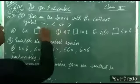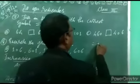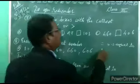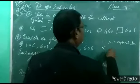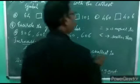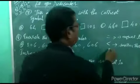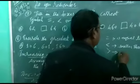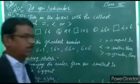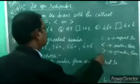These 3 symbols, or signs, were given. This sign is called 'is equal to' — equal to sign. This sign represents 'less than', or smaller than. And this sign is represented as 'greater than'. Keep in mind these 3 signs: equal to, less than or smaller than, and greater than.